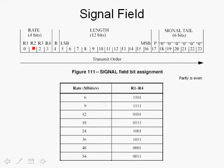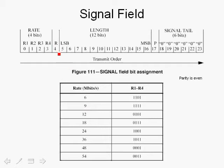The signal field encodes the rate using 4 bits, which gives 16 possible rates. Not all possibilities are used. The supported rates in 802.11a are 6, 9, 12, 18, 24, 36, 48, and 54 megabits per second, and specific codes are defined for each rate. The fourth bit is a reserved bit. Twelve bits are allocated for the length of data supplied from the MAC.